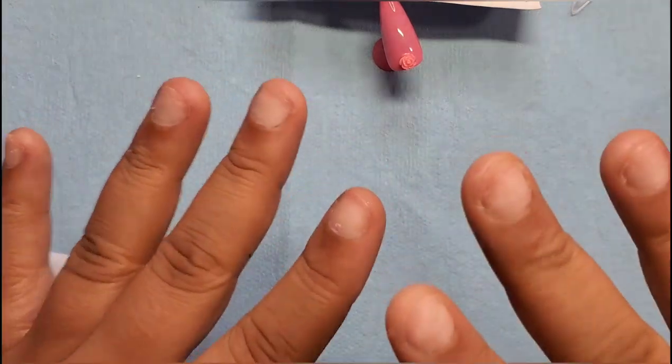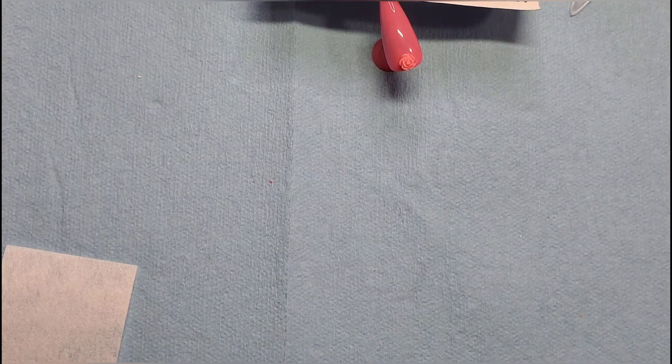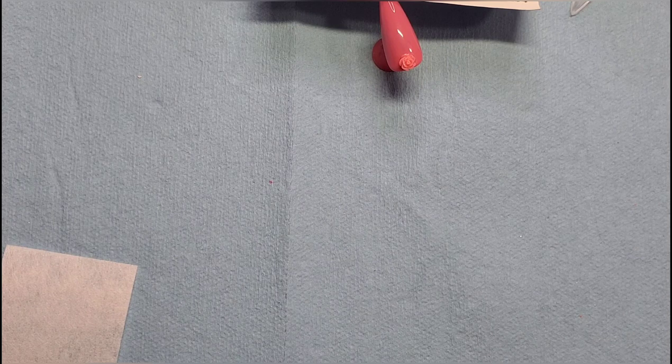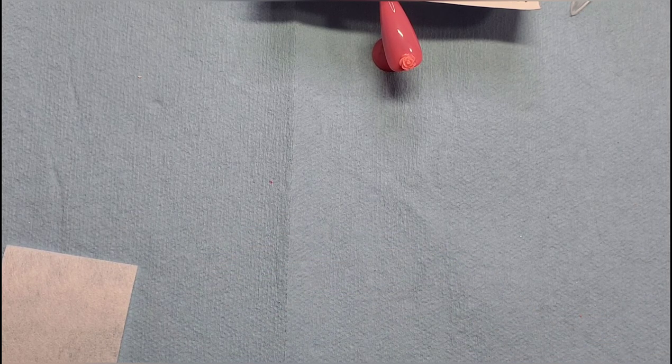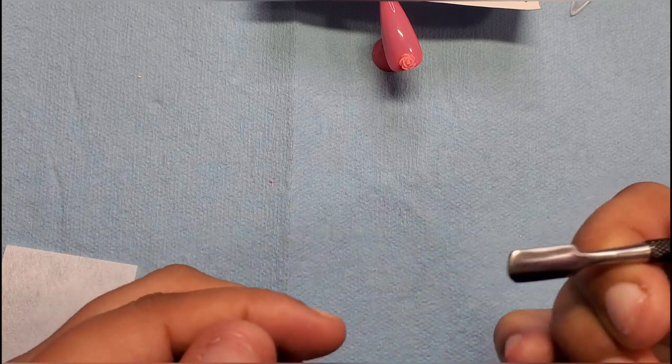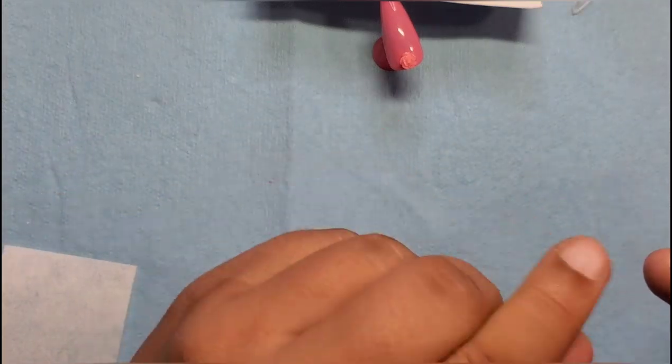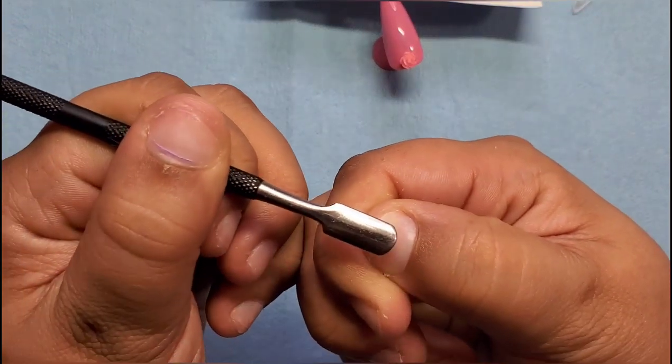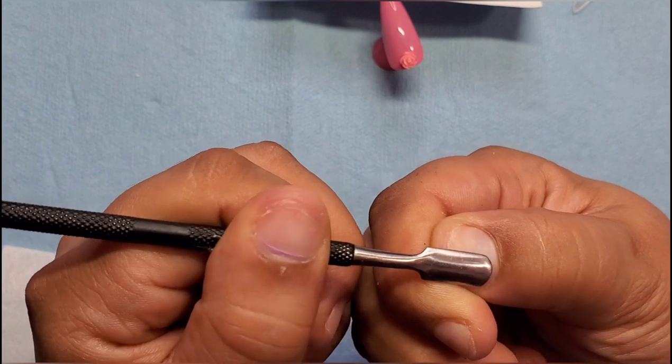Now I'll show you how I would apply a press-on nail. What you would want to do is wash and clean your hands really good. Then you would want to take something like a cuticle pusher. So if you washed your hands, you would push back your cuticles gently just to expose that area.